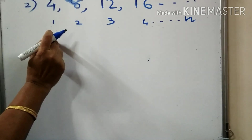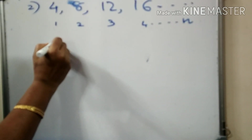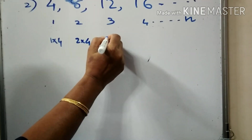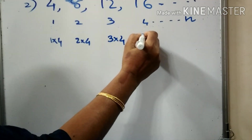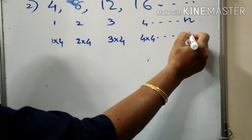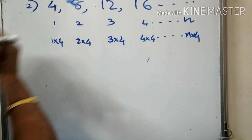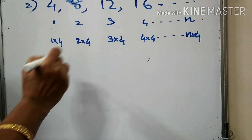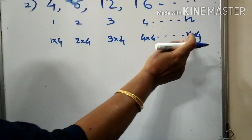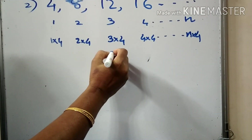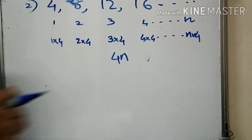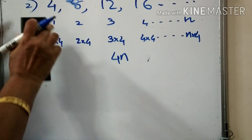That number one — multiply: 1 into 4, 2 into 4, 3 into 4, 4 into 4, the last one n into 4. Then the sequence in algebraic form is n into 4, which is 4n.